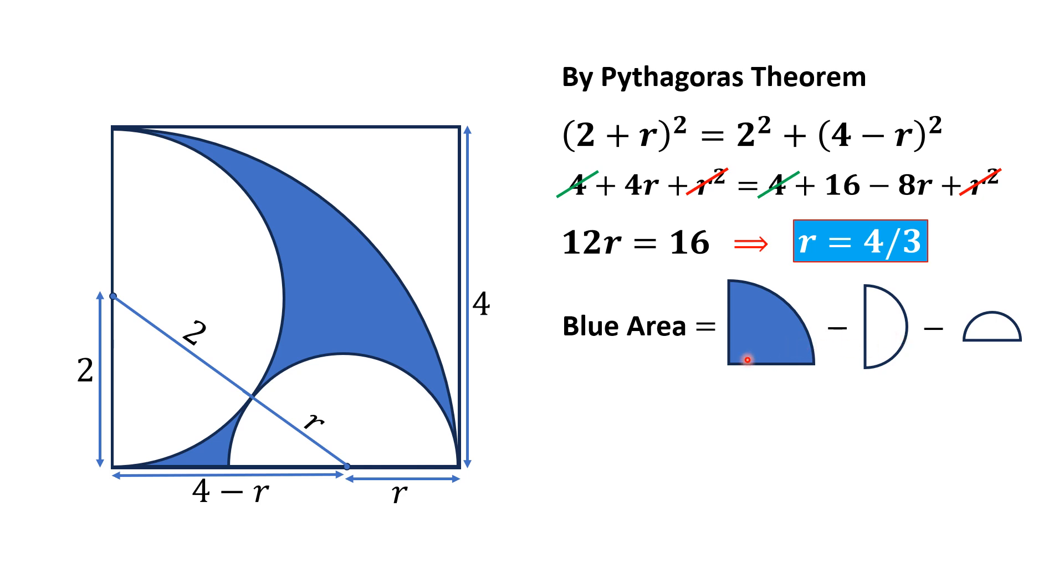Area of this blue shaded quarter circle having radius equal to 4 is equal to 1/4 times π r², where r is 4, minus 1/2 for the semicircle which is half of the area of a circle, so it is multiplied by 1/2, and similarly this one.